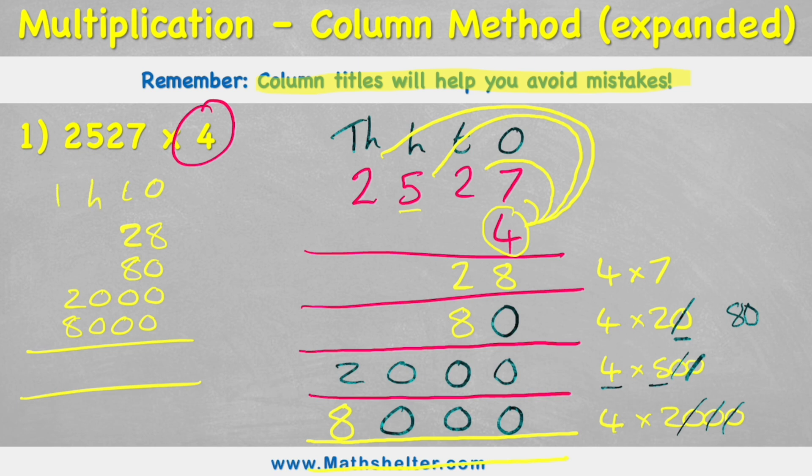1s, 10s, 100s and 1,000s. In my 1s column, I have an 8. In my 10s, I have a 10. So carry the 1. Put my 0 in the 10s column. In my 100s, I now have a 1. And in my thousands, I have two plus eight, which is 10. So my answer to 2,527 times four is 10,108.